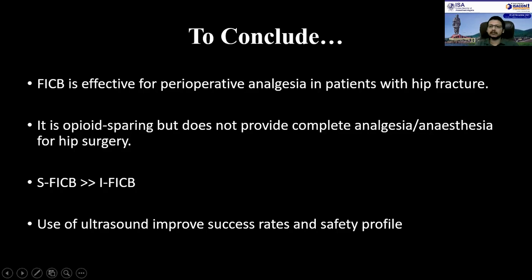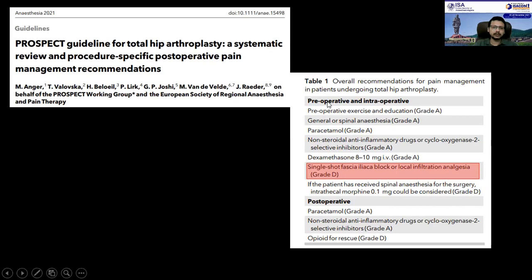To conclude, fascia iliaca compartment block is effective for perioperative analgesia in patients with hip fractures. It is opioid-sparing but does not provide complete analgesia or anesthesia for hip surgery. The suprainguinal fascia iliaca compartment block is a good choice over the infrainguinal approach, and the use of ultrasound has improved the success rate and safety profile. The recent PROSPECT guidelines for total hip arthroplasty have also recommended the use of single-shot fascia iliaca block for pain management in the perioperative period. Thank you for your patient hearing, and I am thankful to the organizing committee for this wonderful opportunity.